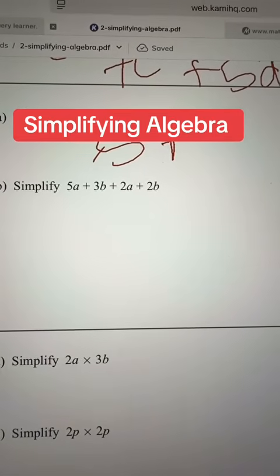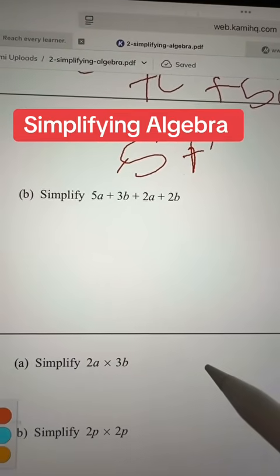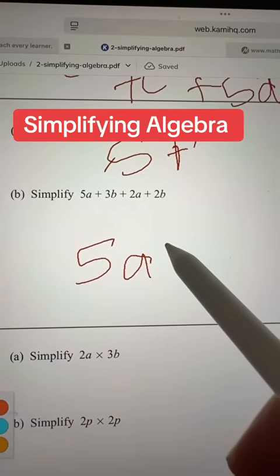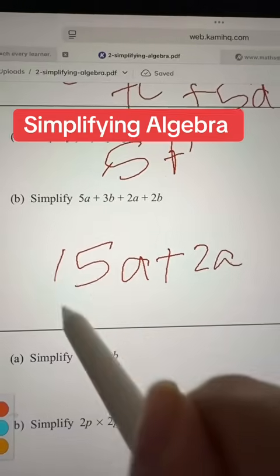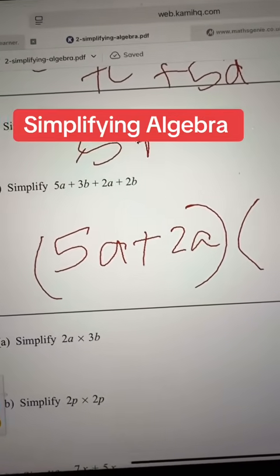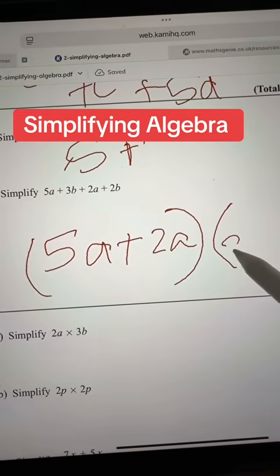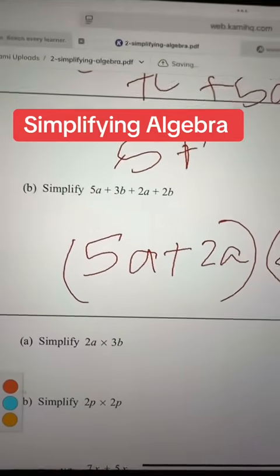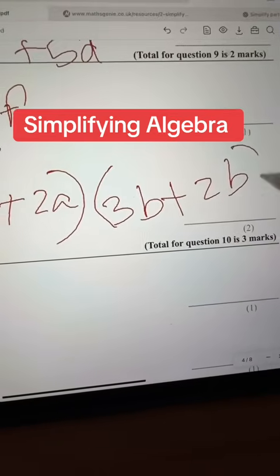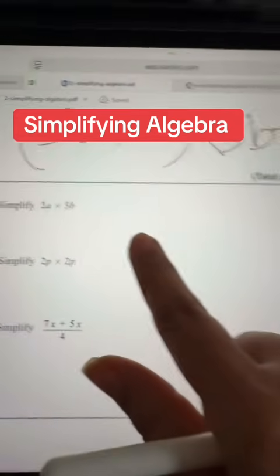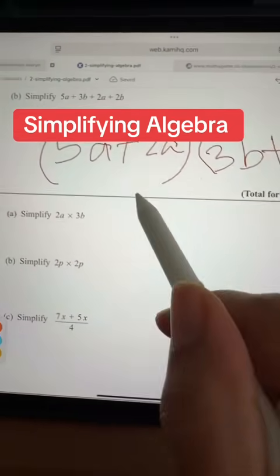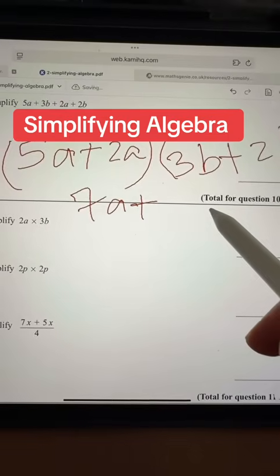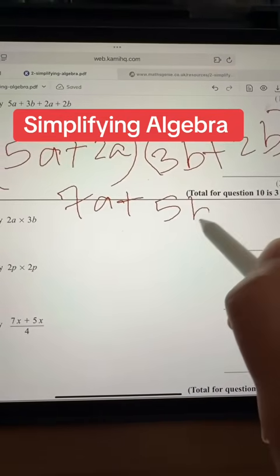Next one. Again, we will do the same thing what we did before. So get all the a's together and get all the b's together. So 5a plus 2a. Then you have 3b plus 2b. So you will get that as 7a plus 5b.